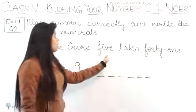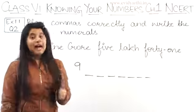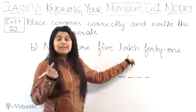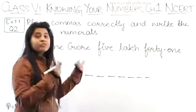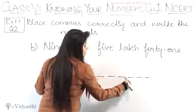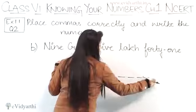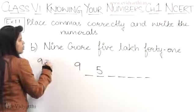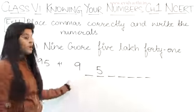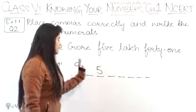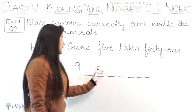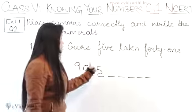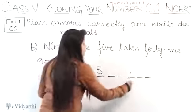So start with 9. 9 crore. Crore means how many digits? 7 digits. So 1, 2, 3, 4, 5, 6, 7. Right. So 9 crore, 5 lakh. Now 5 lakh, 5 lakh means 5 followed by 5 digits. After this, how many digits will come? Lakh has how many zeros? 5 zeros.